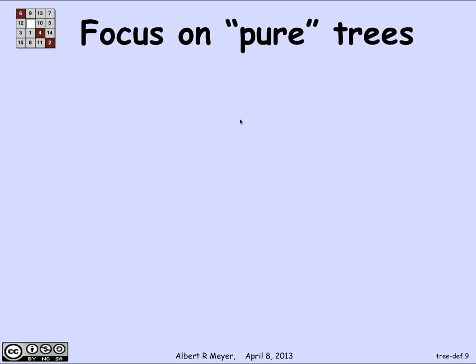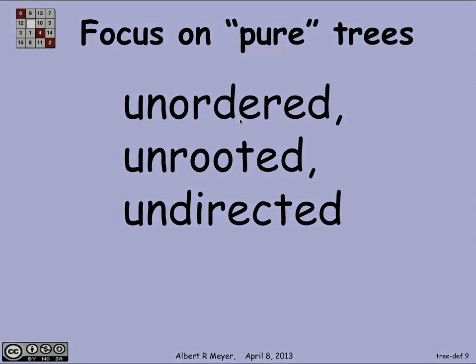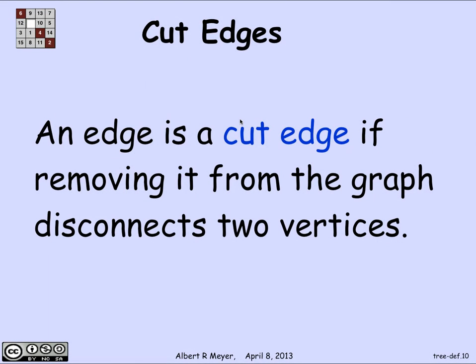We're going to focus on so-called pure trees, which are unordered, unrooted, and undirected. Let's examine some more properties of trees and equivalent definitions. It will be important for theoretical reasons and convenience to know many different characterizations of trees. We're starting with the definition of a connected simple graph with no cycles, but there are other ways to characterize it.